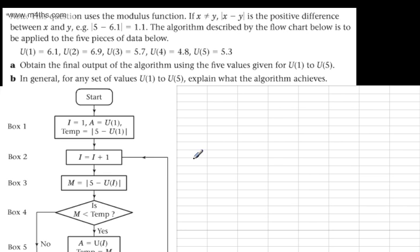In this video, we're going to continue our work with D1 and look at implementing an algorithm given a flowchart. The question notes that this question uses the modulus function. If x is not equal to y, the modulus of x minus y is the positive difference between x and y — for example, the modulus of 5 minus 6.1 is equal to 1.1. All this is doing is giving us the absolute value, the distance between two numbers. If we do 5 minus 6.1, it's minus 1.1, but we take the absolute value, which is 1.1.